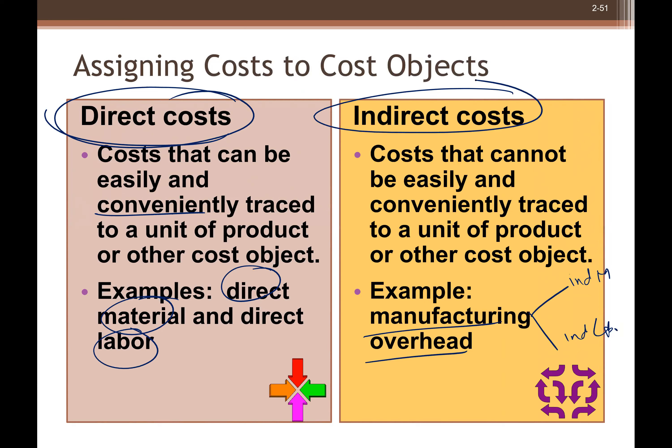So this classification is specifically based on just direct costs and indirect costs, not the segregation of manufacturing overhead. Either costs are direct or costs are indirect. Another example of indirect costs which cannot be easily traced would be lubricants or the electricity bill.